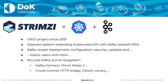Strimzi is a CNCF project since 2019, based on the operator pattern which extends the Kubernetes API with some Kafka-related CRDs. When you deploy Strimzi as an operator, you get Kafka as a native custom resource in Kubernetes — so you have pods, deployments, StatefulSets, but even a Kafka custom resource where you can set all the configuration. The operator takes care of starting the deployment of your Kafka cluster and handles configuration, security, and rolling updates of brokers with new Kafka versions or updated parameters.